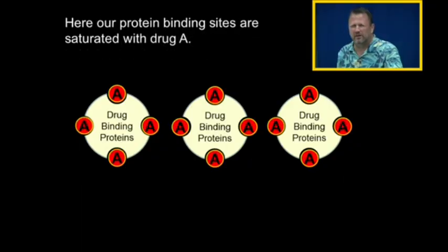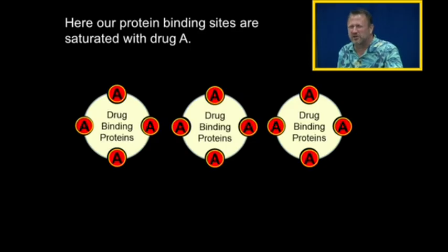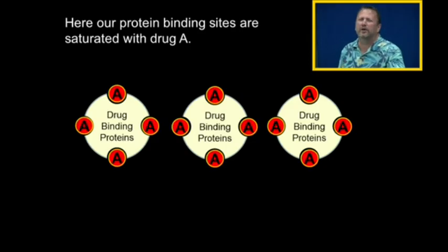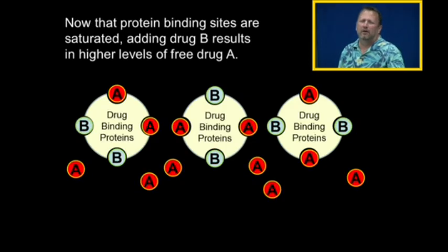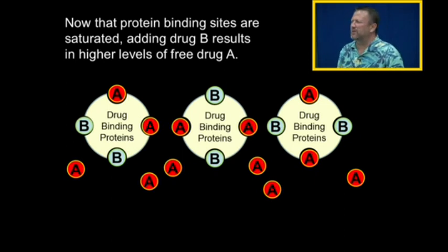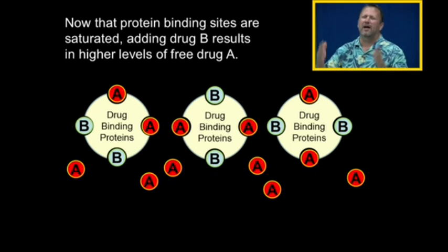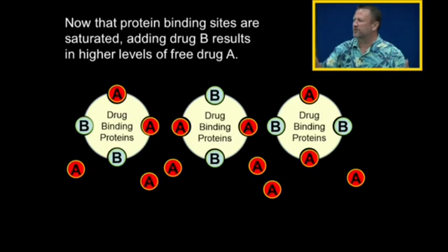Again, here are the protein binding sites saturated with Drug A. If I add Drug B, which is even more highly protein bound, it will displace Drug A from the protein binding sites. So by simply adding Drug B, I've raised the free drug levels of Drug A.